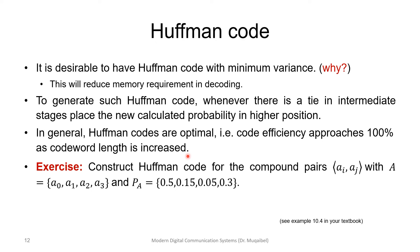Can you extend this to joint symbols? Instead of four symbols, consider pairs of symbols — giving 16 total combinations (a0a0, a0a1, ...). Assuming independence, compute the joint probabilities and generate the Huffman code for all 16 possible symbol pairs. Huffman coding efficiency approaches 100% as the codeword sequence length increases.